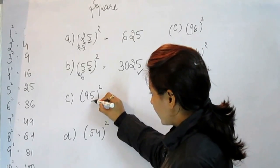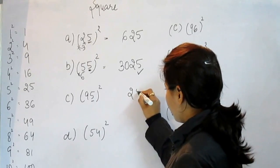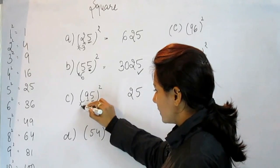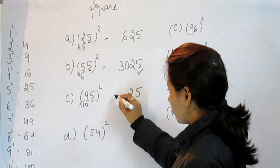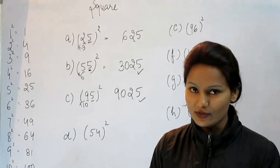Now what is the square of 95? That is 25, and what comes after 9? That is 10. When we multiply 9 with 10 we get 90. And this is the answer.